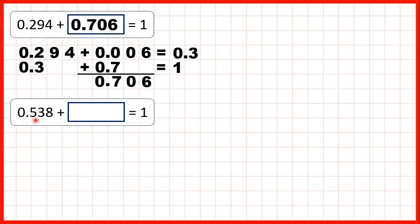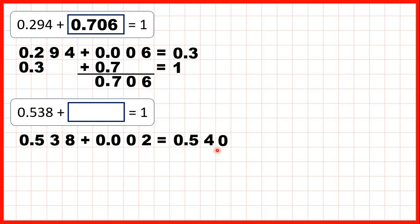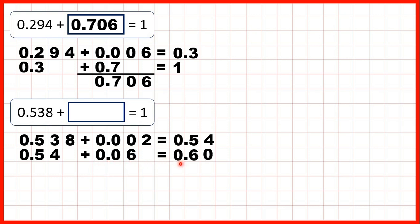Now we start with 0.538. If we take that and add 0.002 — so 2 thousandths — that gives us 0.540, just as 538 plus 2 is 540. But we don't need to write zeros on the end of decimals. Now from 0.54, we can add 0.06, so six hundredths, and that gives us 0.60, just as 54 plus 6 gives us 60.